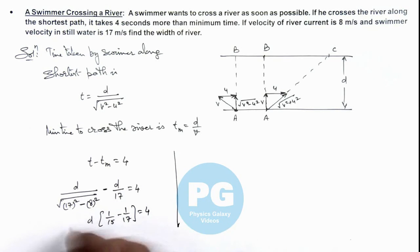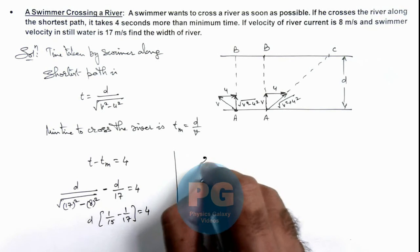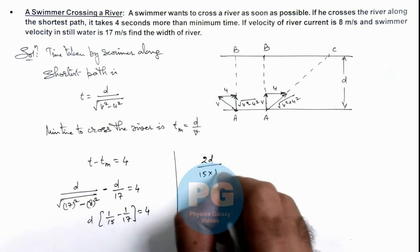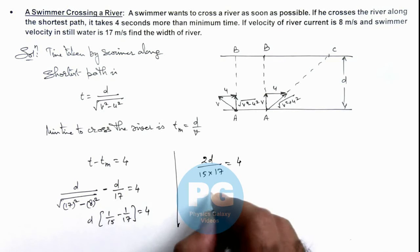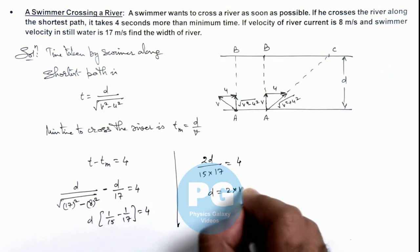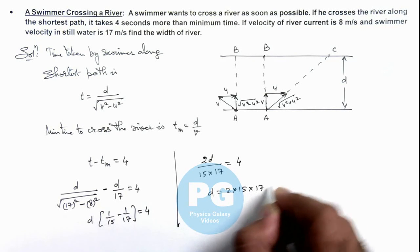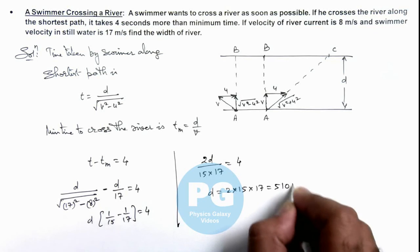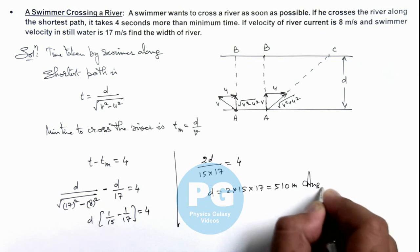So if we further simplify, this gives us 2d by 15 into 17 is equal to 4, or the value of d is 2 into 15 into 17, that is equal to 510 meters. That will be the final result of this problem.